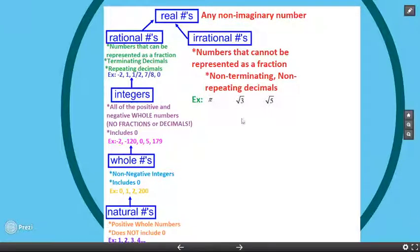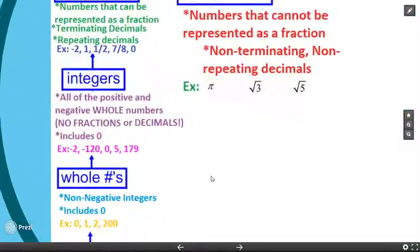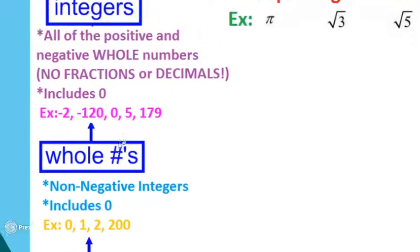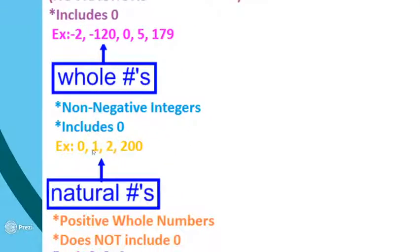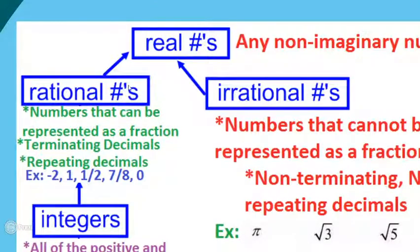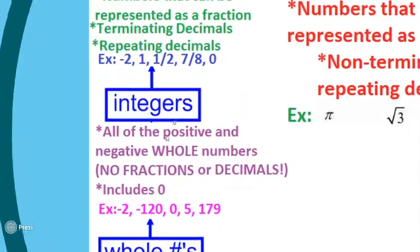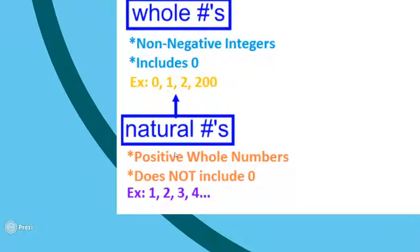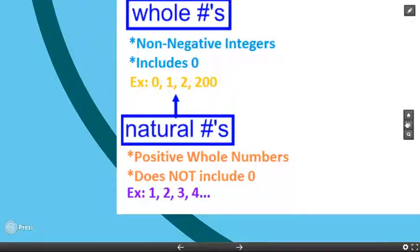A whole number will be an integer, a rational number, and also a real number — some numbers fall into more than one category. Whole numbers are non-negative integers including zero, so all the positives and zero without any decimals. Since they're non-negative integers, they're a category of integer, and since integers are rational, whole numbers are also rational. Since rationals are real, whole numbers are also real. And a natural number is all of the positive whole numbers — a subset of whole numbers that does not include zero.